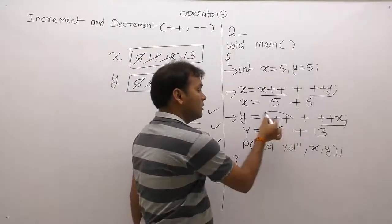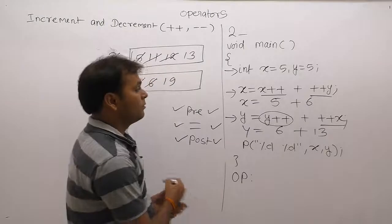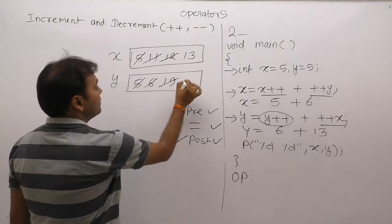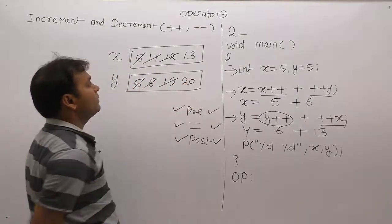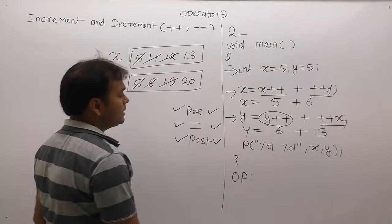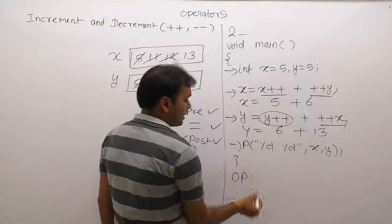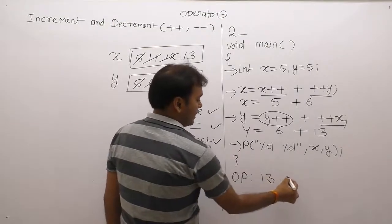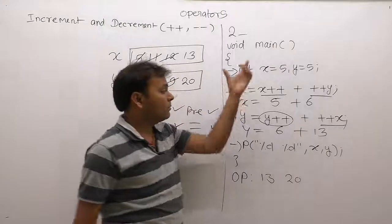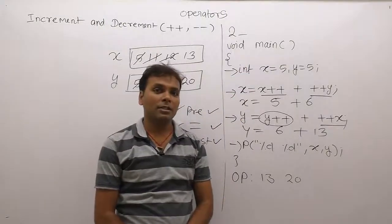After assignment, the post operation is applied to variable y one time, so y is incremented once and y becomes 20. The final value of x is 13 and the final value of y is 20. According to printf, the output displayed is 13 and 20. This is the output of that expression according to assignment rules.